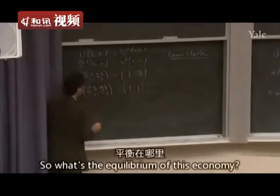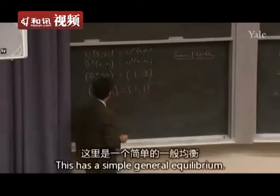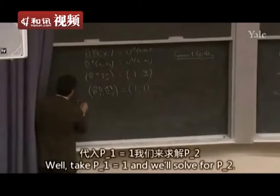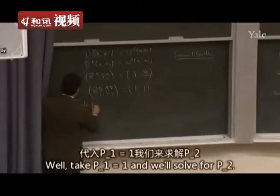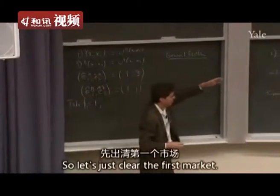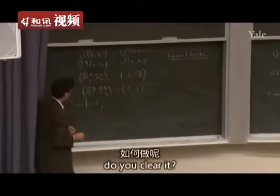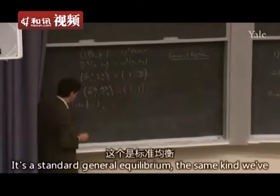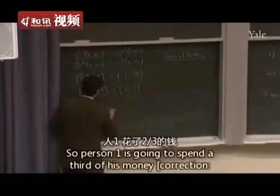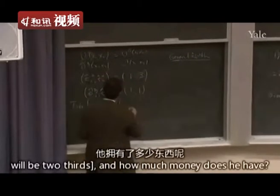So we've now reduced the financial equilibrium to a general equilibrium — the same kind of economy we had before, just with augmented endowments that take into account what people own through the stocks. What's the equilibrium of this economy? It has a simple general equilibrium. How do we solve for it? Take P1 equal to 1 and solve for P2.